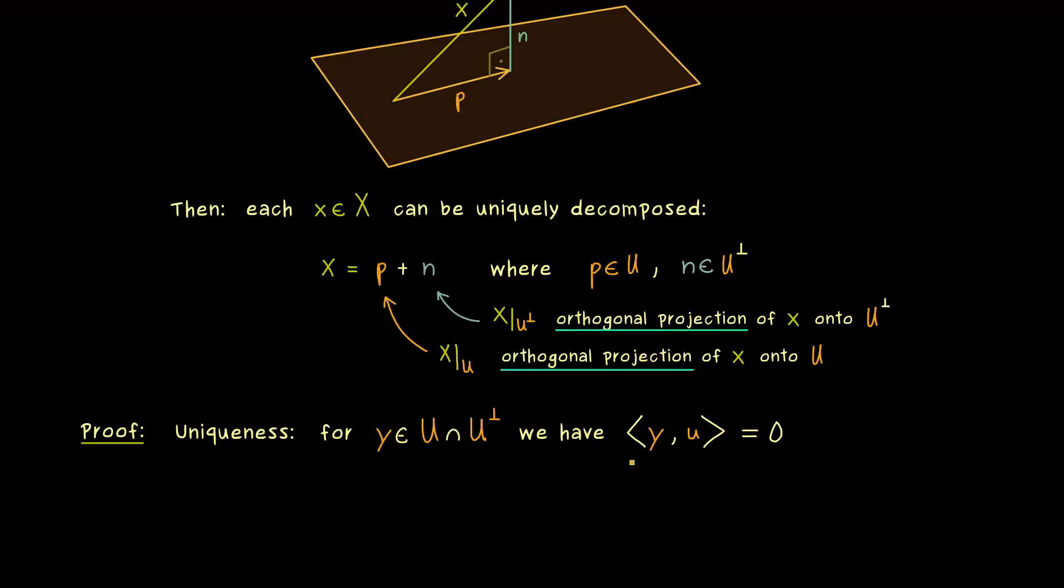However, since y also lies in U, we could definitely choose y instead of the u. So what we get is y with itself in the inner product is equal to zero. And there we can use that the inner product is positive definite, which means only the zero vector satisfies this. So you see, the result is that the intersection we have here only consists of the zero vector.